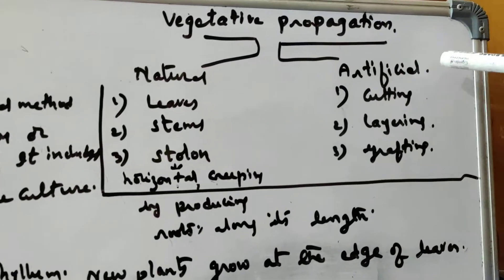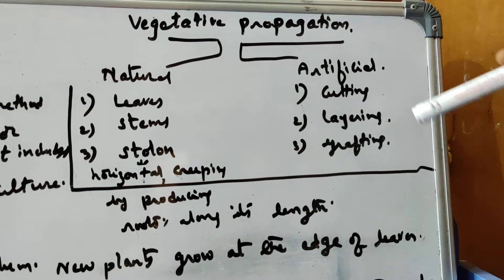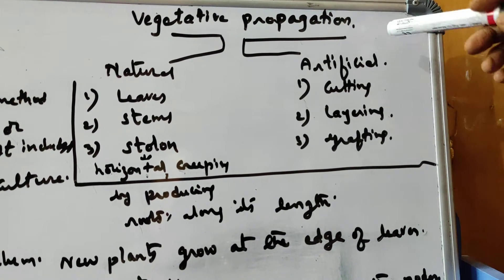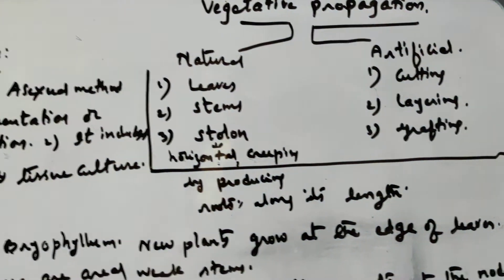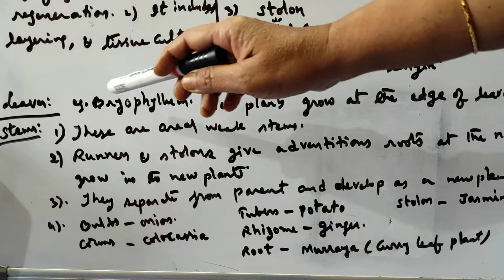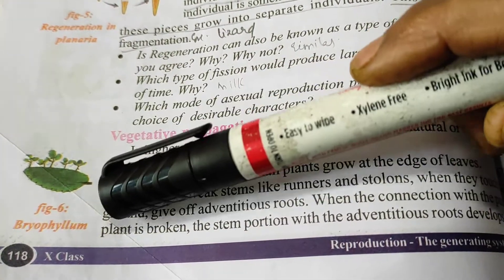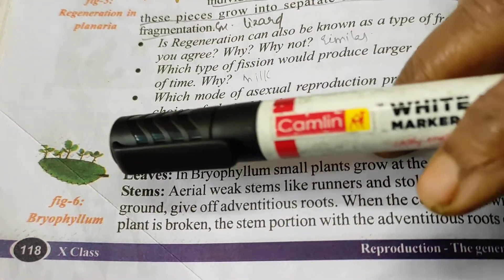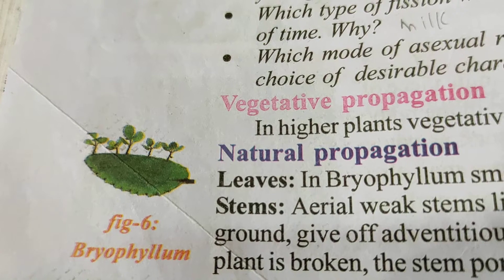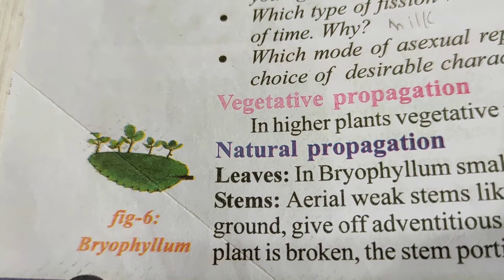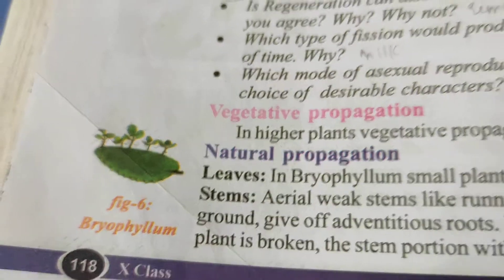This is natural propagation occurring in nature itself. Artificial propagation includes cutting, layering, and grafting. Under natural propagation, leaves also play a main part. The example is Bryophyllum — you can see it in the textbook. At the edges of the leaf blades, in the furrow-like indentations, new plants will rise. This is natural propagation where leaves take part.